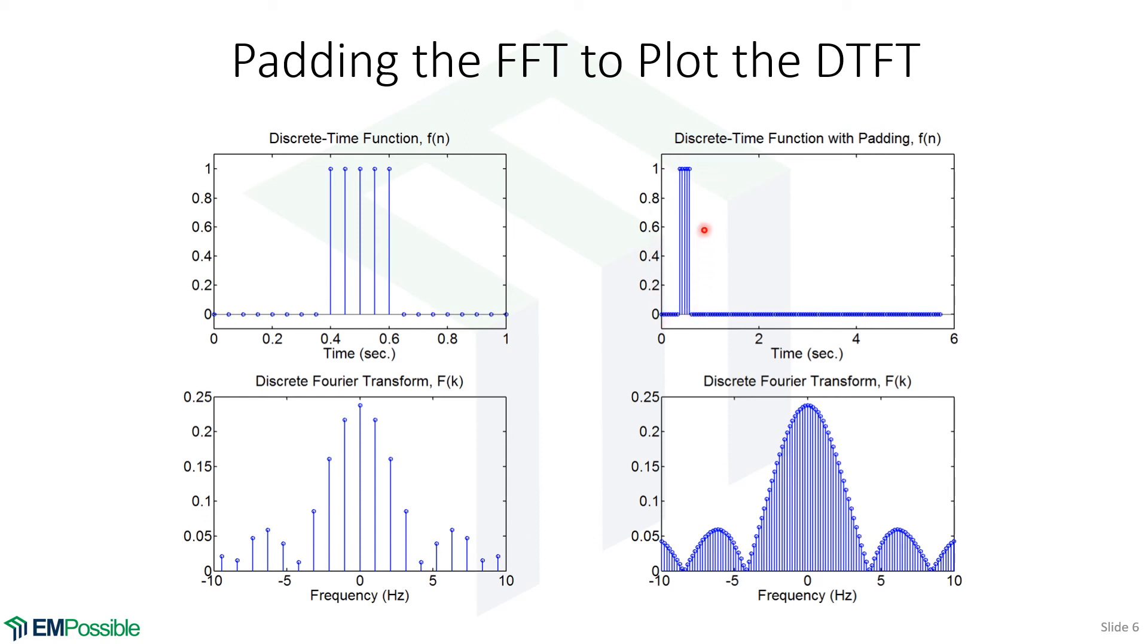There's our function, same number of points essentially as here, but we added a whole bunch of zeros afterwards. When we calculate the discrete Fourier transform of this or calculate the FFT, this is what we get. I'm showing it as discrete, but we could plot it as a continuous line. And in fact, these fall within that envelope.